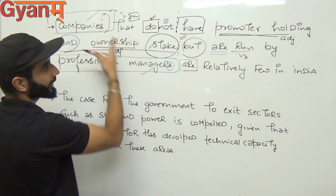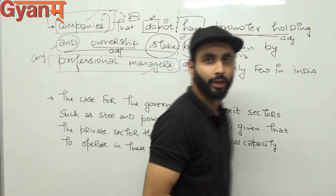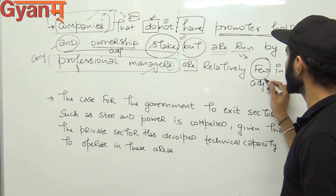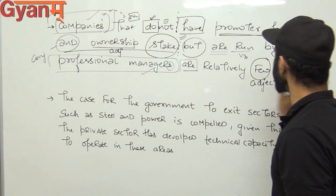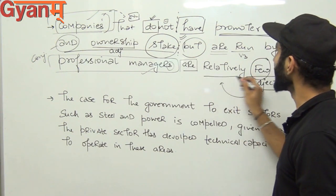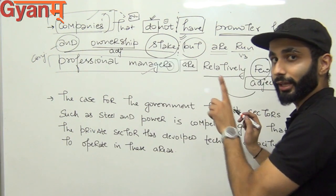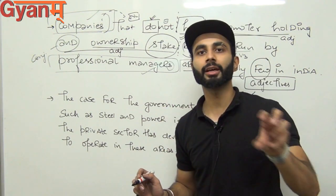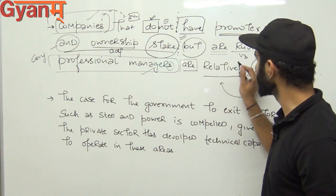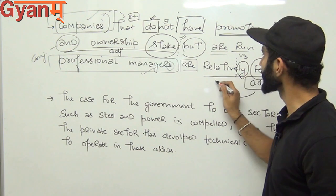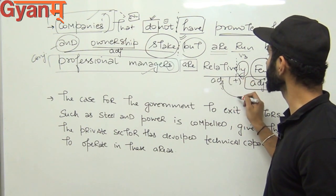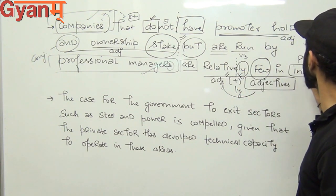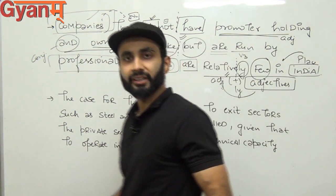'Are' again links back to companies. Now 'relatively few in India' — 'few' is an adjective, not a noun. In previous topics we saw that adjectives have their qualities described by adverbs. If someone writes 'relative few' — that would be wrong because 'relative' is an adjective; it should come before a noun. To modify an adjective, you need an adverb. Adjective first degree plus '-ly' gives you the adverb — so 'relatively' is correct. 'In India' — a preposition phrase. So far, we find no error.